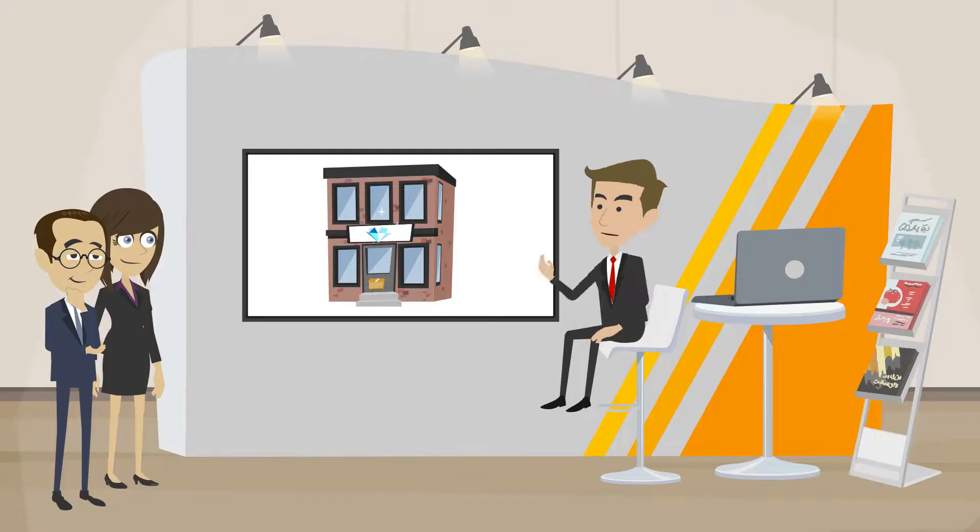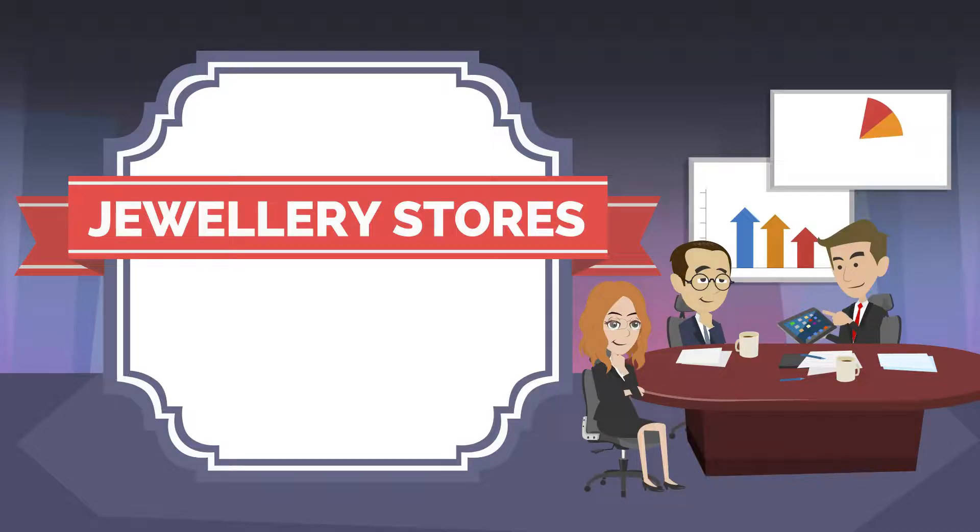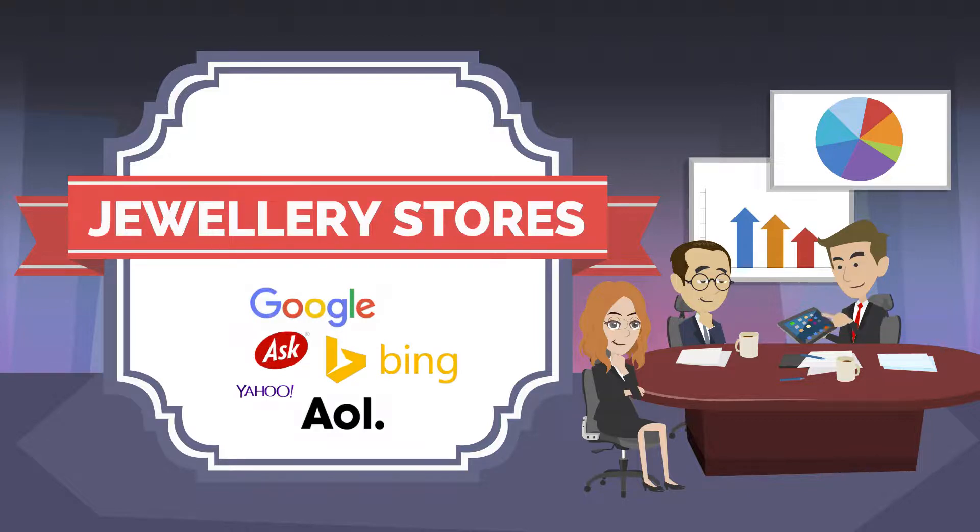For example, if we are interested in email addresses of all jewelry stores in the world, we would use our root keyword jewelry stores, and then search over 30 search engines for the term jewelry stores plus city and country.